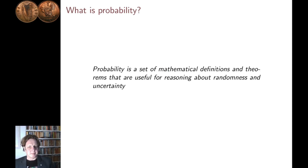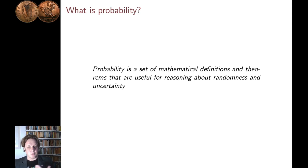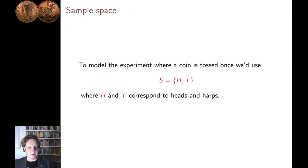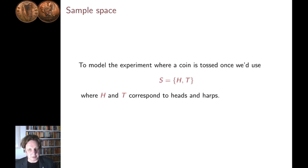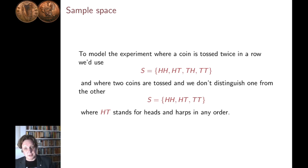To summarise: probability theory is a set of mathematical definitions and theorems that are useful for reasoning about randomness and uncertainty. So we're going to start off with some of those mathematical definitions. They sound quite dry, but we're just setting things up so that we know what we're doing. Once we have things written down mathematically, then we can debate how to apply them to model either uncertainty or randomness. So we start off with a sample space — a sample space is just a set of possible outcomes. We're making a distinction between the mathematical theory, where the sample space is just a set that can contain any objects, and the application that we're going to put it to when modelling with probability theory.